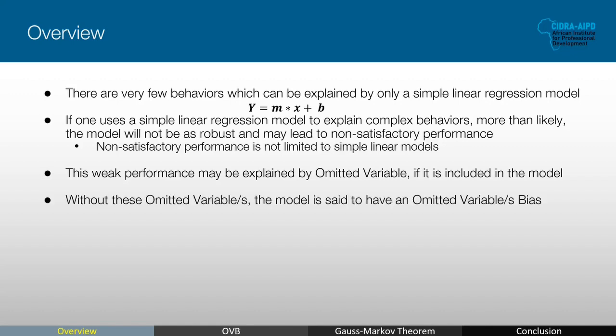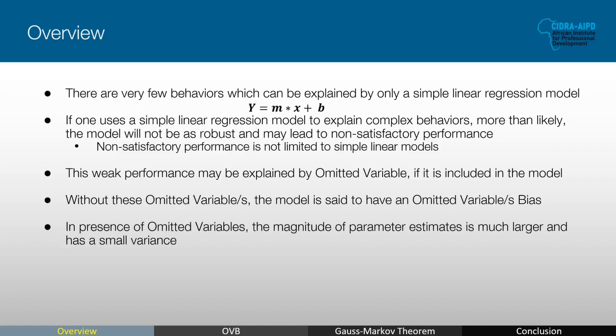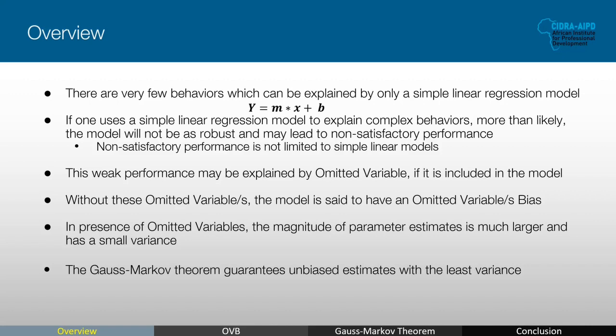This causes the model to be affected by an omitted variable bias. In the presence of omitted variables, one or more variables that are in the model will compensate for the omitted variable, which will cause the magnitude of those variables to be overstated by having a large estimate. Also, because of this confounding effect, the variance is also lower. We will go into detail in later slides. The Gauss-Markov theorem guarantees unbiased estimates with least variance — that is, efficient.